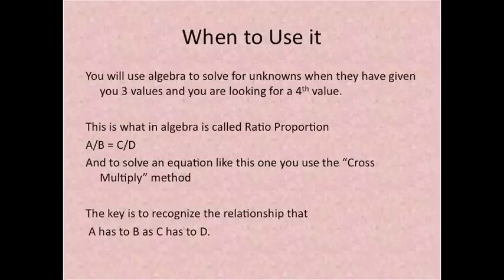So when to use it? You will use algebra to solve for unknowns when they have given you three values and you are looking for a fourth value. This is what an algebra is called ratio proportion.